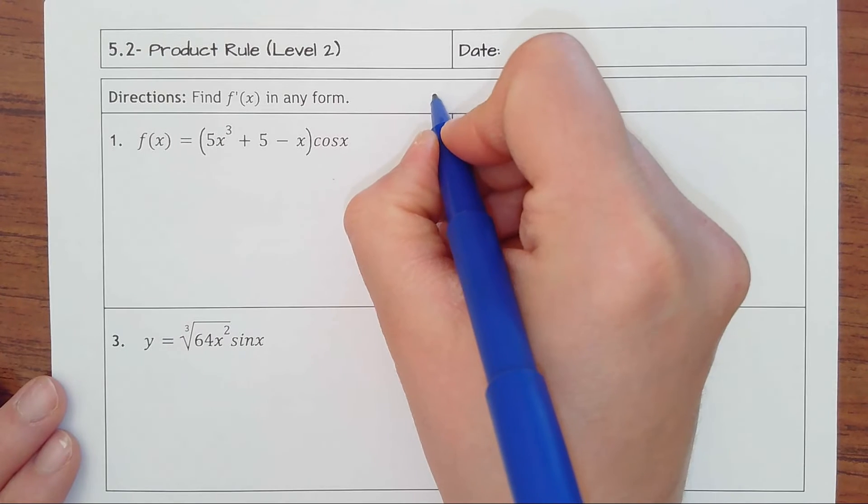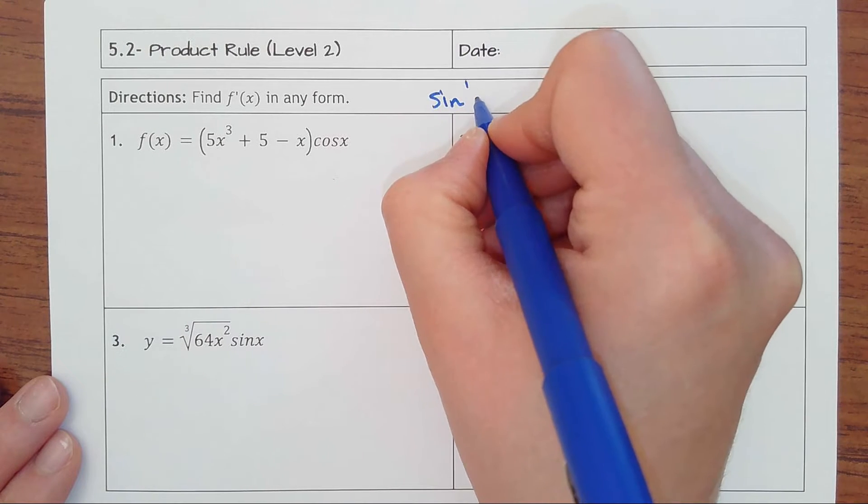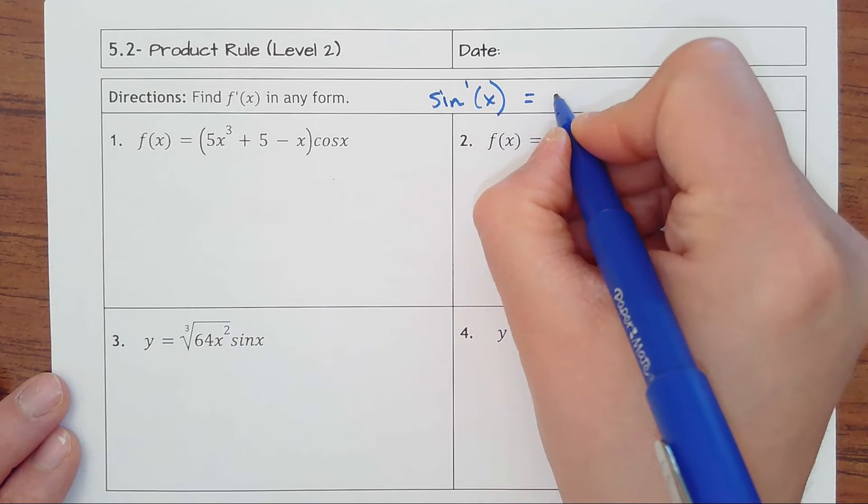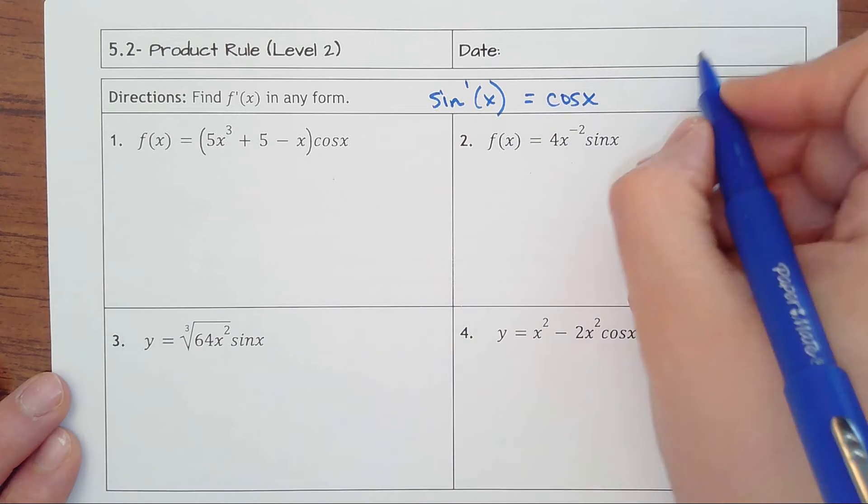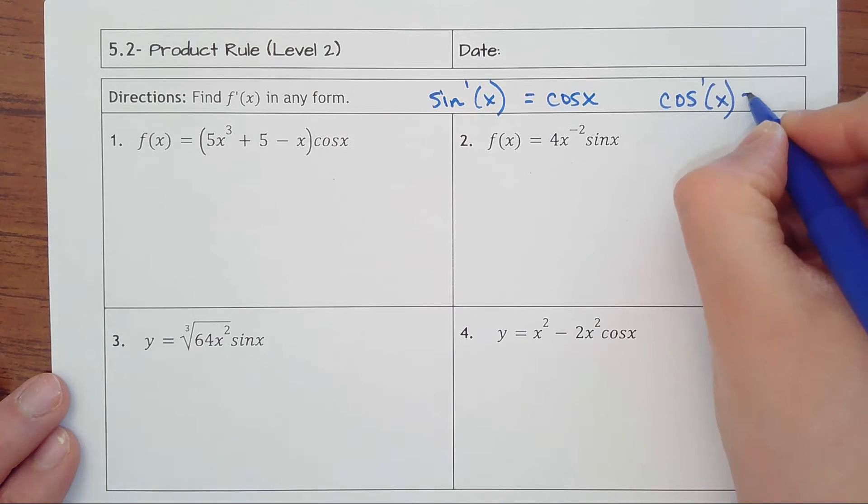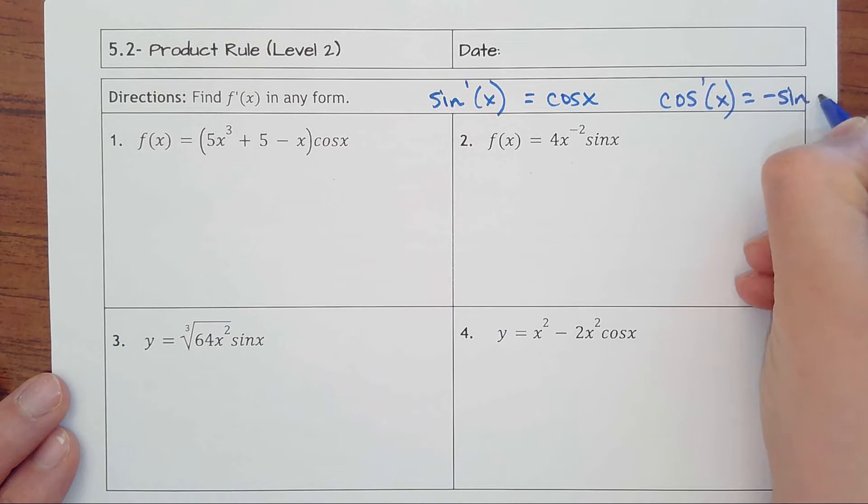Remember that the derivative sine prime of x, or the derivative of sine, is cosine. And the derivative of cosine of x is negative sine of x.